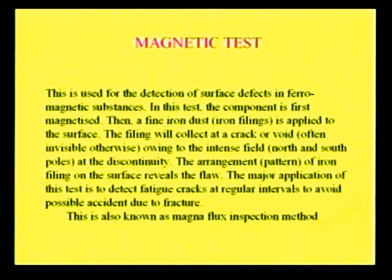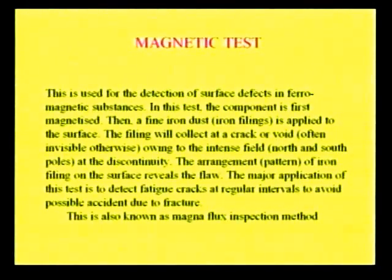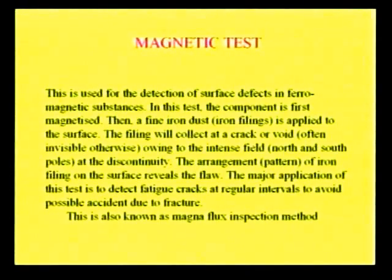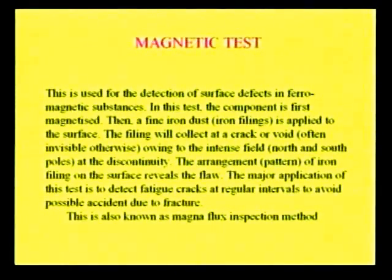The magnetic test is used for detection of surface defects in ferromagnetic substances. In this test, the component is first magnetized, then fine iron dust is applied on the surface. The iron filing collects at a crack or void due to the intense field — north and south poles form at the discontinuity and a magnetized area is formed. Such an arrangement of iron filings on the surface reveals the flaw. The major application is finding fatigue cracks at regular intervals to avoid possible accidents due to fracture. This method is also named the Magnaflex inspection method.